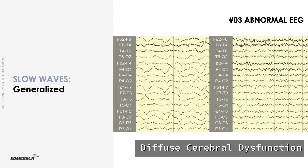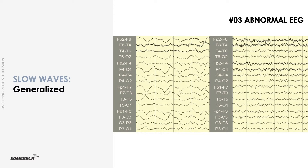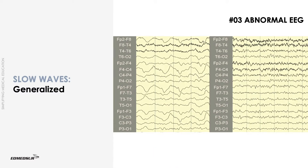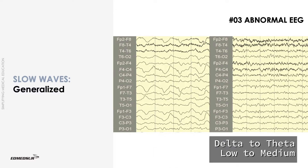There are two main categories of generalized slow waves. First, delta frequency medium to high amplitude waves, which are often regular and rhythmical. Second, delta or theta frequency low to medium amplitude waves, which are often irregular and arrhythmical.